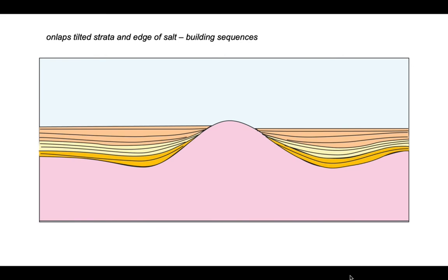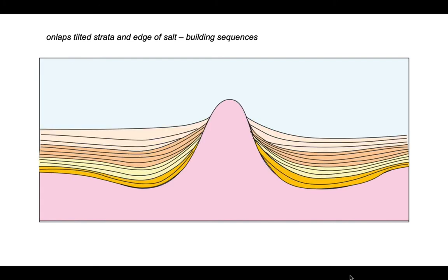These are called halokinetic sequences. Halo from salt, kinetic meaning movement. So these are growth strata, synkinematic strata deposited as the salt deforms, like this.